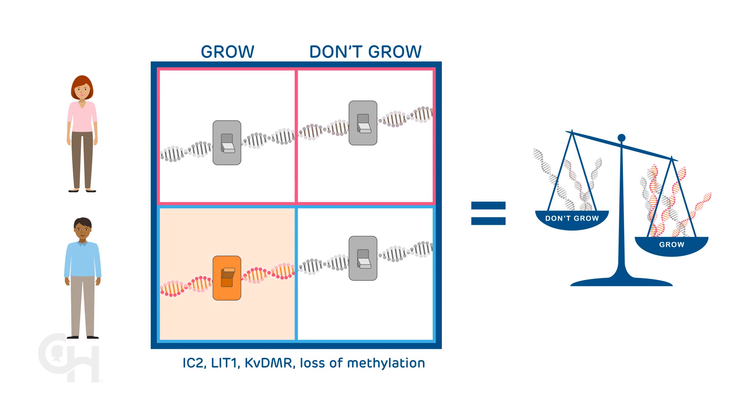IC2-LIT1-KV-DMR loss of methylation occurs when the mother's don't grow switch is turned off. While the change is on the mother's chromosome, it is not something the mother carries.